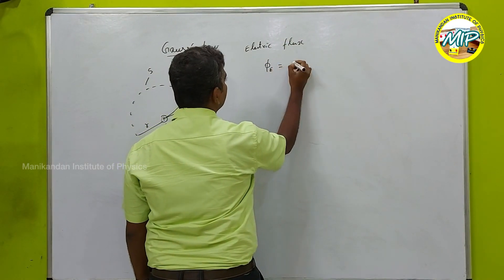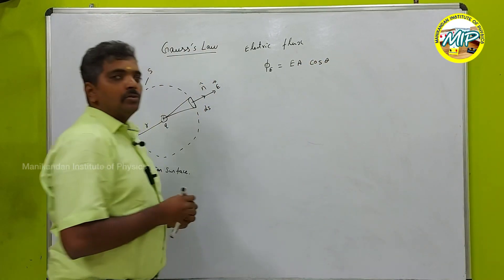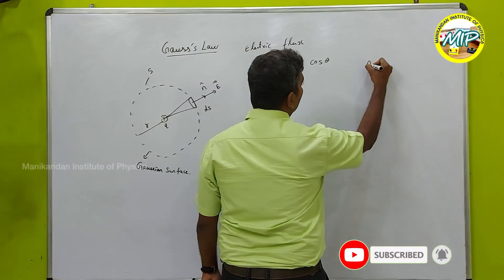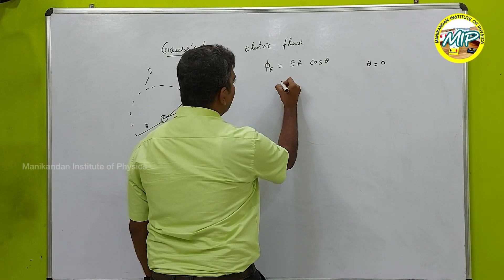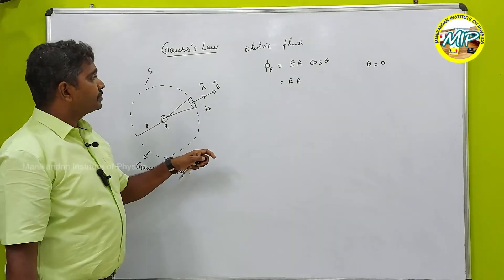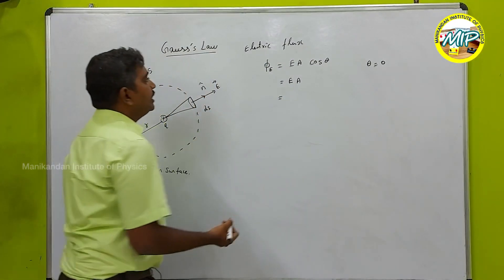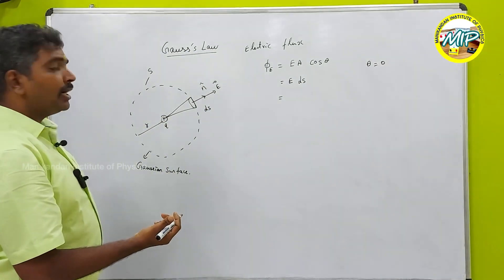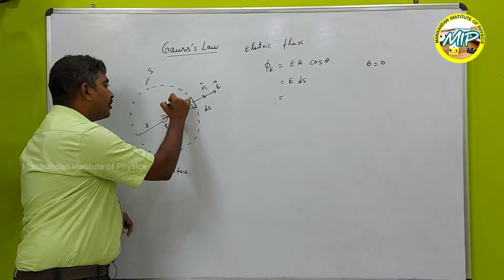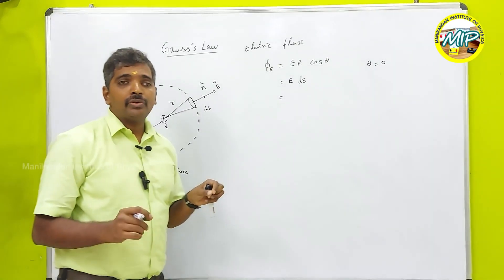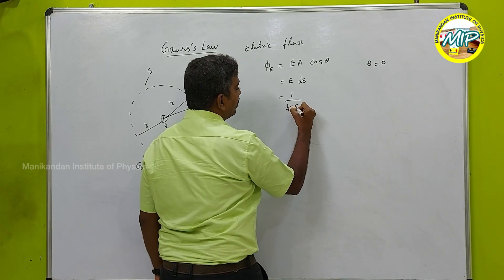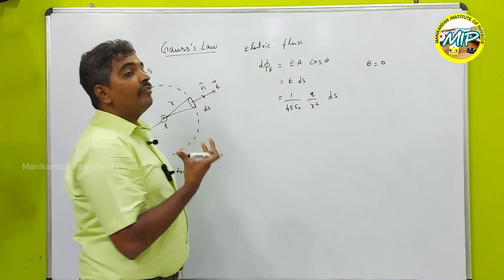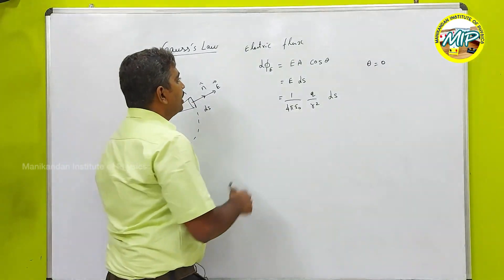The electric flux is Φ_E = E · A · cosθ. Since the normal and electric field are parallel, θ = 0°, and cos 0° = 1, giving Φ_E = E · A. Replacing A with the area element dS, and substituting the electric field of a point charge E = (1/4πε₀)(Q/r²), we get dΦ = (1/4πε₀)(Q/r²) dS. This is the small flux through the small surface area element dS.